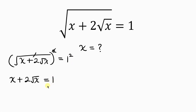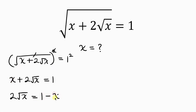Our next step will be to get rid of this remaining square root by isolating it. Let's move x to the right hand side so that we have 2 root x on the left, equal to 1. As x crosses to the right it becomes minus x, so 2 root x equals 1 minus x.